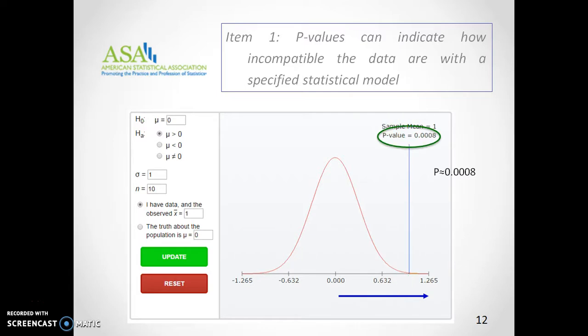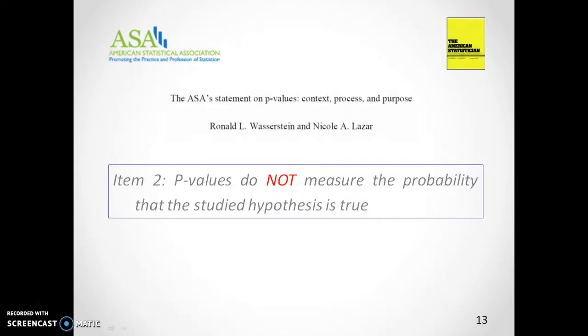In this case, following the first point of the ASA statement, we would say that the observed results are hardly compatible with the previous model. But does it mean that the probability of both antihypertensives having the same effect is 8 per 10,000? According to the second ASA statement, no. The reason for this is that we confuse two conditional probabilities.